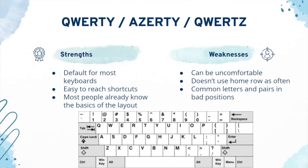In terms of strengths, they are default for most keyboards and easy to reach with shortcuts and symbols. Most people already know the basics of the layouts and are used to these. However, they have weaknesses too — they can be uncomfortable to use and they don't often use the home row. Common letters and pairs are in awkward positions.